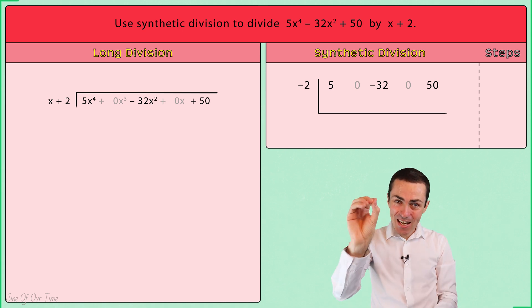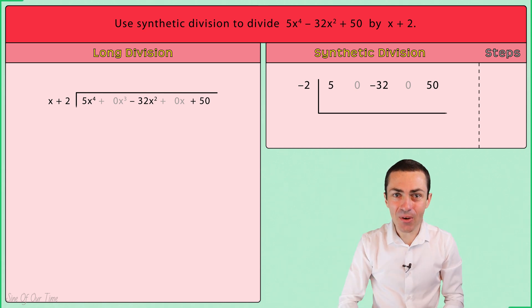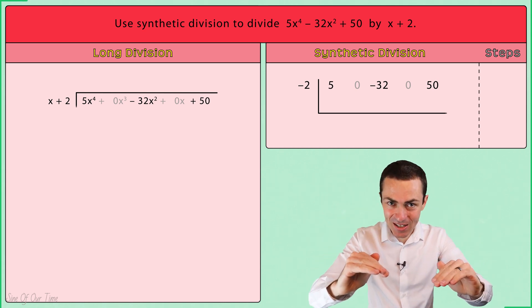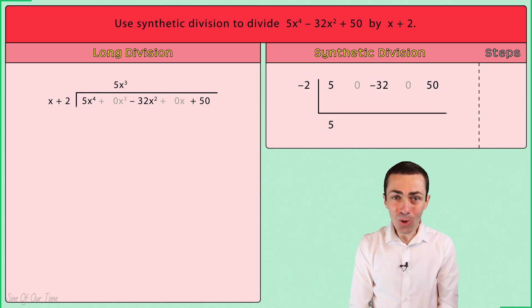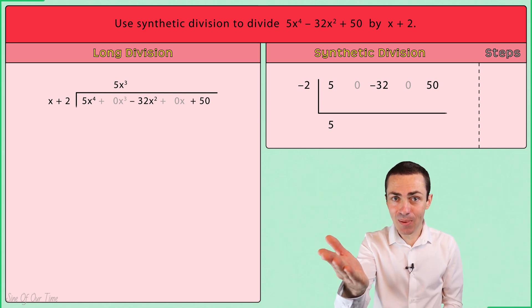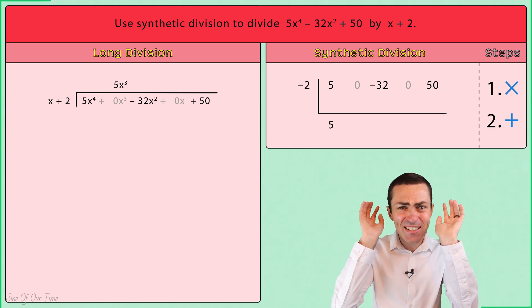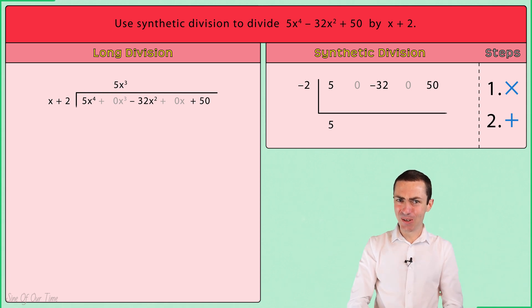To complete the setup we take that 5 and we bring it down and write it below the synthetic division symbol. All we have to do now is repeat those two very simple steps, which are multiply and add. It's really as simple as that. So let's do it.